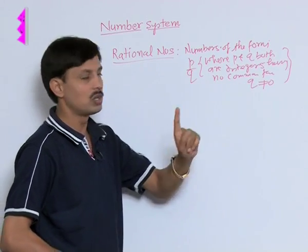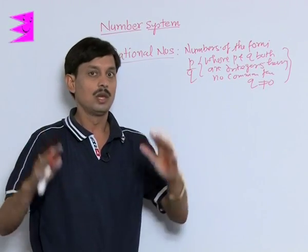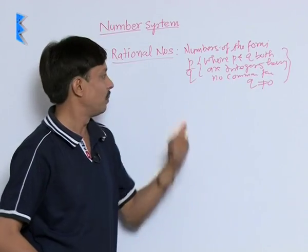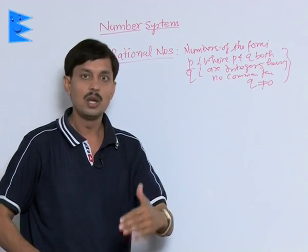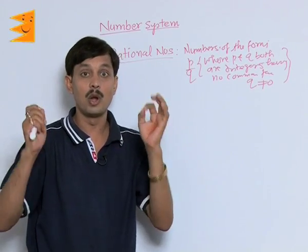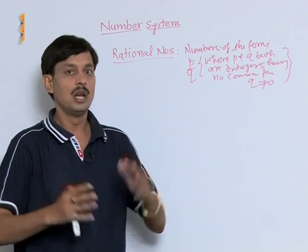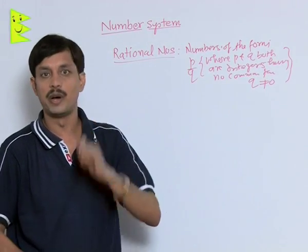P and Q are co-prime with Q is not equal to 0. Why Q is not equal to 0? Because if Q becomes 0, the result will become not defined because division with 0 is not defined.